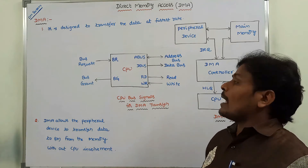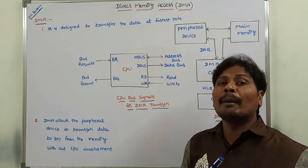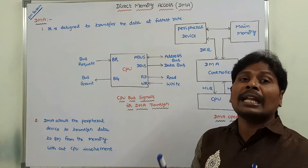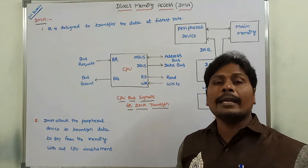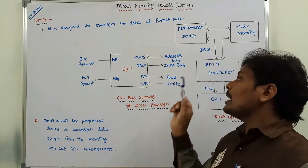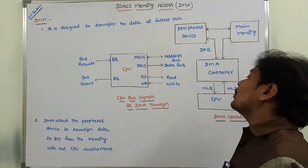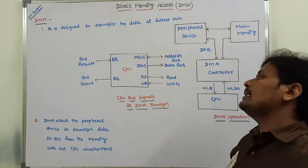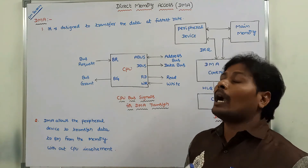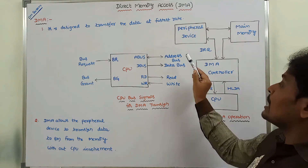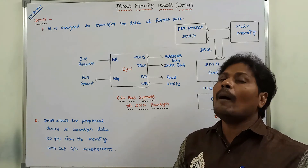DMA uses the bus request line to request the CPU to release control over the memory buses. The CPU terminates the currently executing instruction and places the address bus, data bus, and read/write lines in a high impedance state. High impedance state behaves like an open circuit, so the output is disconnected from the input. At that time, the CPU activates the bus grant output line and informs the DMA controller that these buses are in a high impedance state. Now, the CPU releases control over the memory buses.